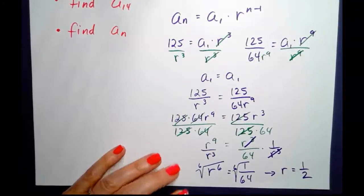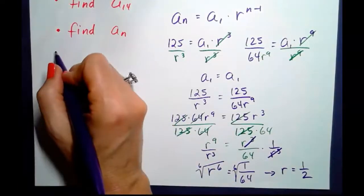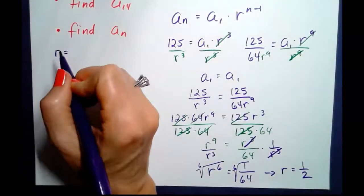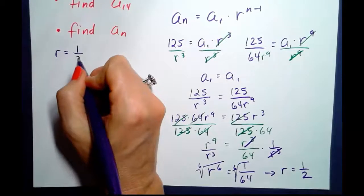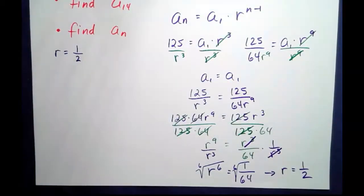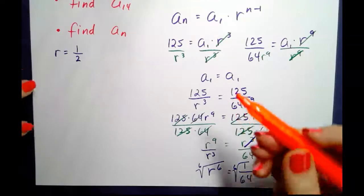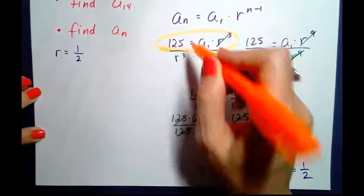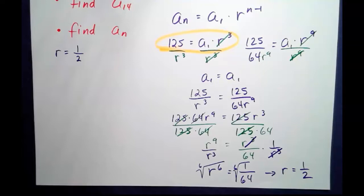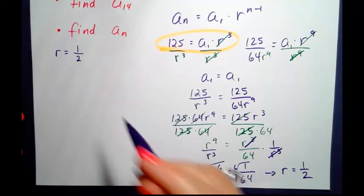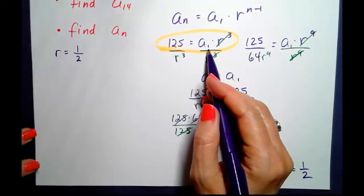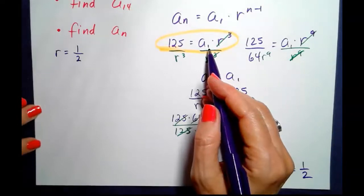Our common ratio that these factors are changing by is that we're just taking half every time. So r is 1 half. If r is 1 half, let's go back and look at maybe the simpler of the two equations that we wrote. I'm going to plug back in r equals 1 half because we still need to solve for a sub 1.